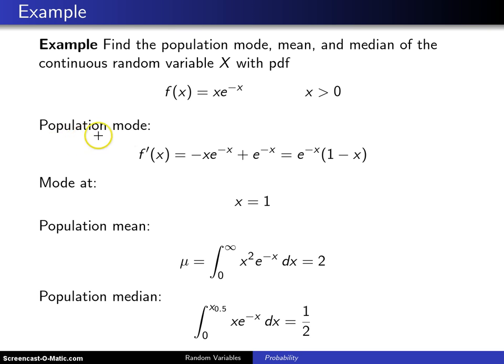To find the population mode, we want to find the peak value of this PDF - the maximum value. Finding maximums from calculus, you simply take a derivative. Using the product rule, here is the derivative of the probability density function. When you pull e^(-x) out, you get this expression. Setting that equal to 0 and solving for x, you get x = 1 as the population mode.